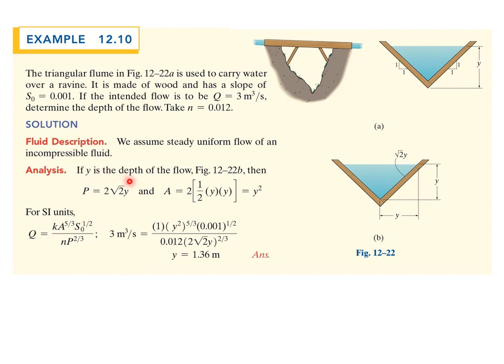If y is the depth of the flow, then from figure 12-22 the perimeter is 2 times the square root of 2 times y. You can kind of follow that. You've got this side here is a square root of 2y, and you've got this side and that side, so you just double it. The area is 2 times the 1/2 base times height. The height is y. The base is y. So the 2 cancels with this, giving y squared.